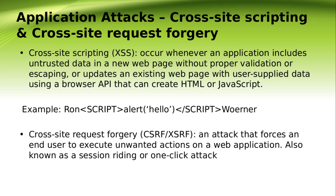Application attacks — cross-site scripting (XSS) and cross-site request forgery (CSRF). The most common method to prevent CSRF attacks is to append a CSRF token to each request and associate them with the user session. Such tokens should at minimum be unique per user session, but can also be unique per request. XSS occurs when an application includes untrusted data in a web page without proper validation or escaping, or updates a web page using browser APIs that can create HTML or JavaScript.